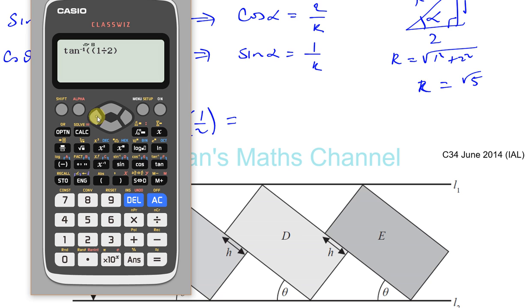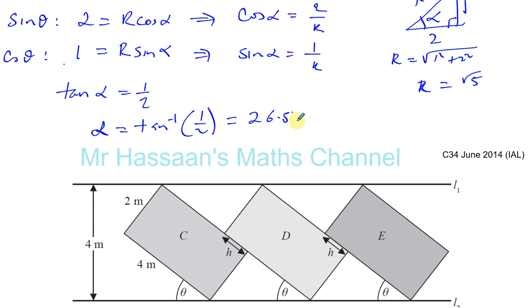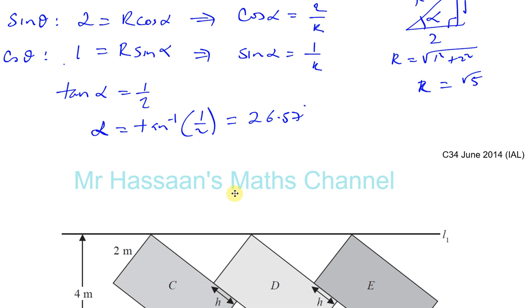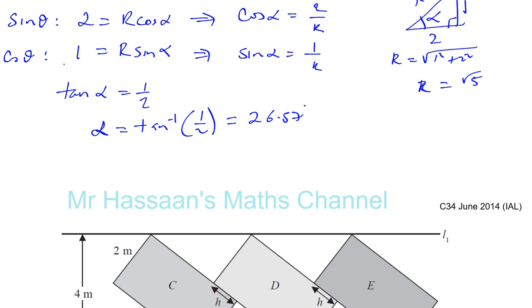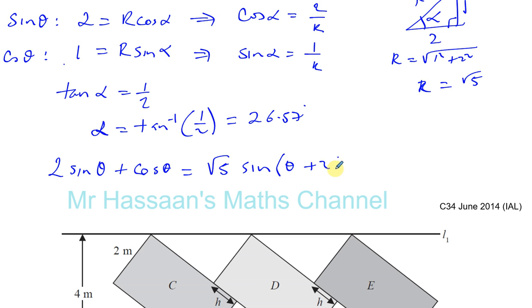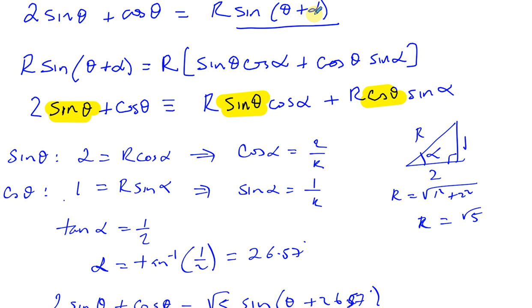So what we can say now is: therefore, 2 sine theta plus cosine theta can be written as root 5 times sine(θ + 26.57°). So R is root 5 and the angle is theta plus 26.57 degrees. I'll do the next part in the next video. Thank you for watching.